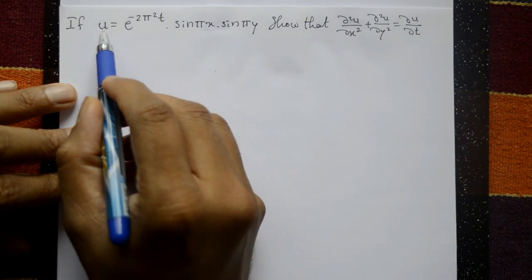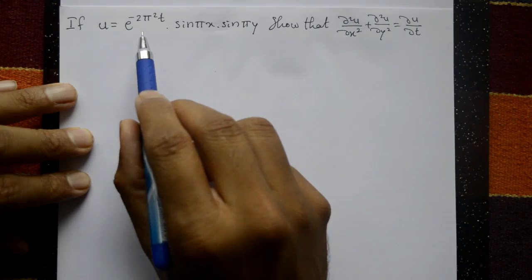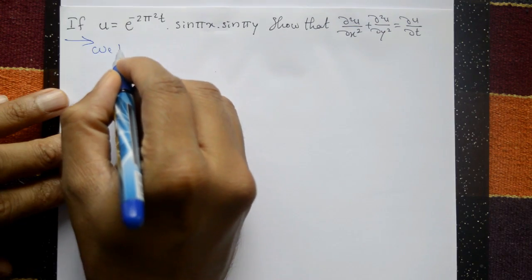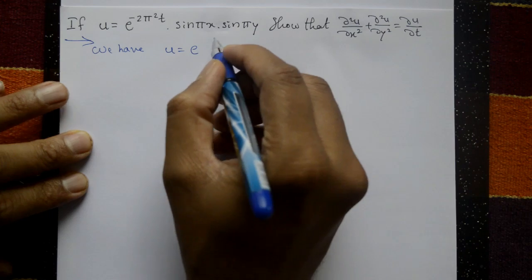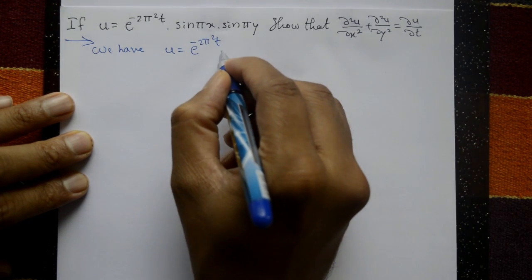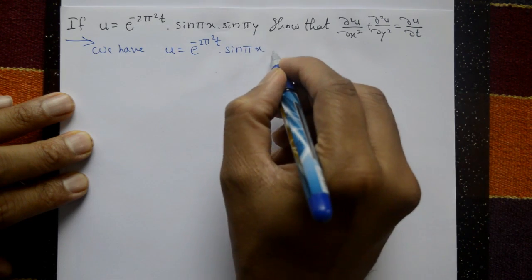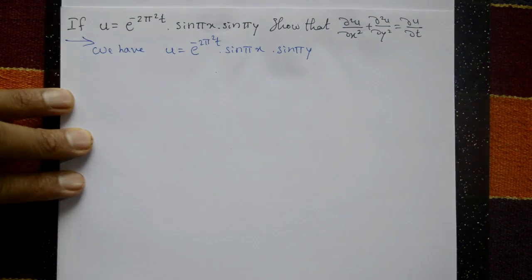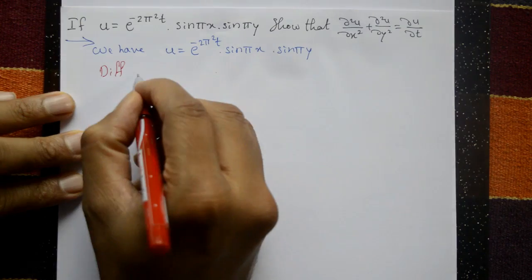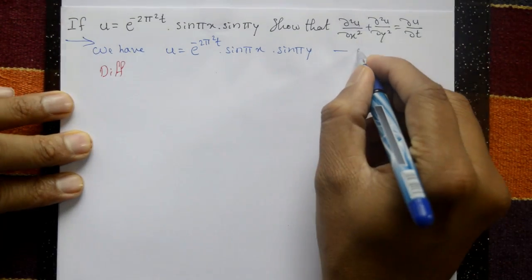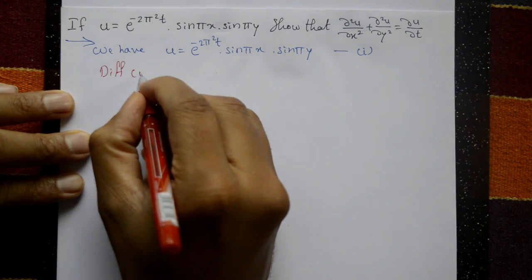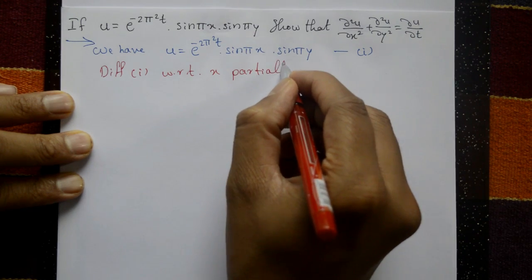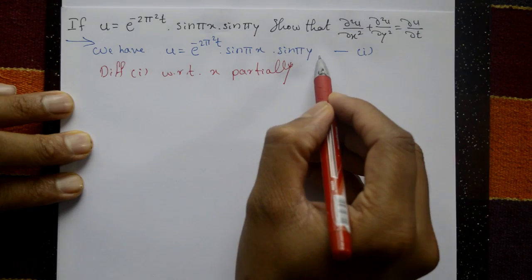Given u = e^(-2π²t) · sin(πx) · sin(πy), this is equation number 1. Differentiate equation 1 with respect to x partially; t and y are treated as constants.